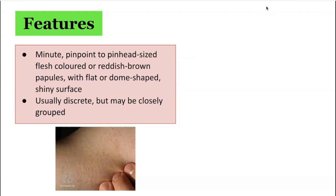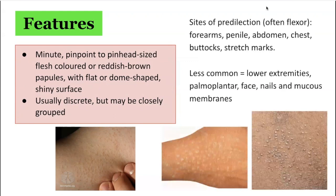In darkly pigmented individuals, the papules tend to be hyperpigmented, but sometimes they can be hypopigmented. They are usually discrete lesions, but may be closely clustered or grouped. The lesions are usually distributed on the flexor aspects of the upper extremities, as well as the chest, abdomen, genitalia, and dorsal aspects of the hands.